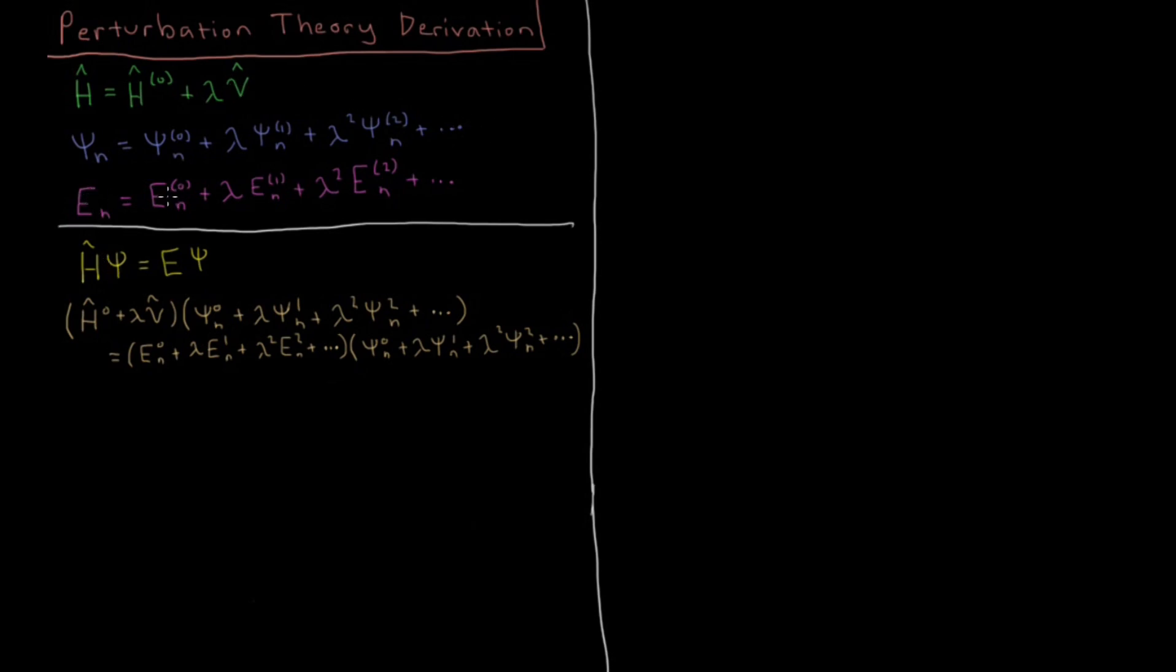Our energy is going to be the energy of the reference system E0, plus the linear correction term lambda times E1, plus the second-order correction term lambda squared times E2, etc., beyond that.